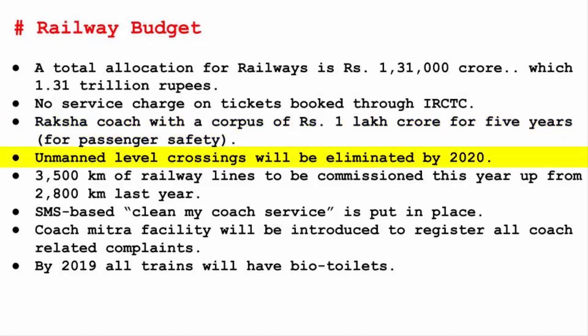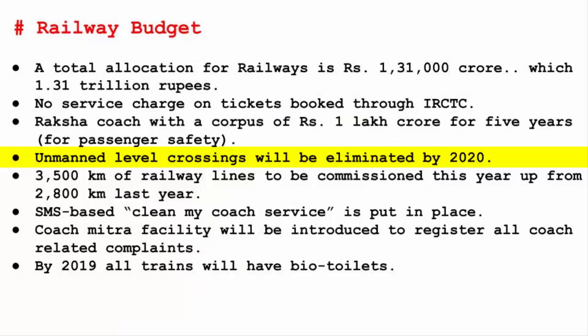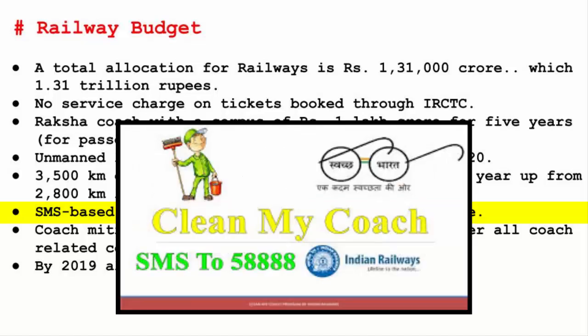The government has decided to eliminate unmanned level crossings by 2020, with railways eliminating over 6,000 unmanned level crossings to reduce accidents — a major problem in India causing many deaths. 3,500 km of railway lines will be commissioned this year, up from 2,800 km last year, as the target distance for laying new lines has increased. An SMS-based CleanMyCoach service is in place — send SMS to 58888 if your train coach needs cleaning — with a dedicated website at cleanmycoach.com.